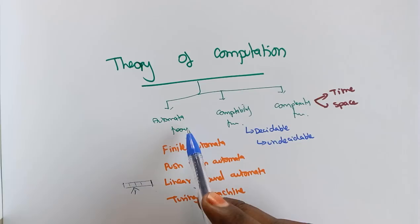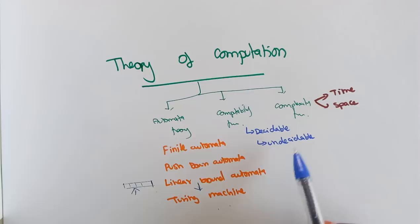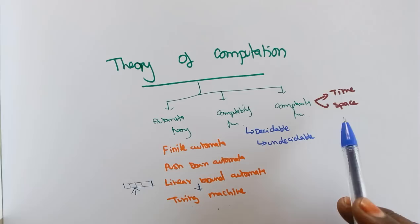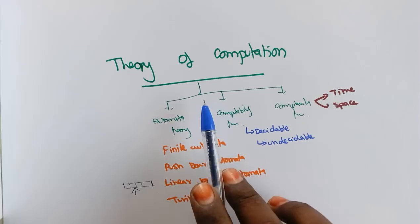Computability Theory describes decidable and undecidable languages — when a problem can be solvable or not. Complexity Theory covers the time and space complexity of algorithms designed for any problem. As a whole, the study of these mathematical models, their decidability, and the complexity of problems is what we call the Theory of Computation.